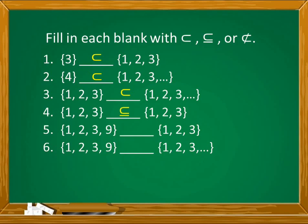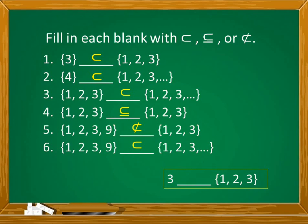Number 4, the answer is subset because they have the same elements. Number 5, 1, 2, 3, and 9 — are these numbers present in the set 1, 2, and 3? No, there is no 9 in the second set. So the answer is not a proper subset. Number 6, a set with elements 1, 2, 3, and 9 — are they present in the second set? Yes, because the second set is an infinite set of numbers. The answer is proper subset. Reminder: to be considered as a subset, the elements must be enclosed with braces. Without braces, it is just an element — not a subset or proper subset.